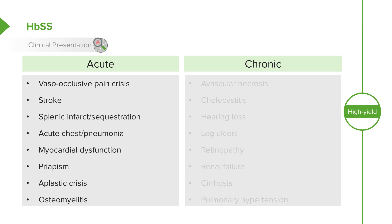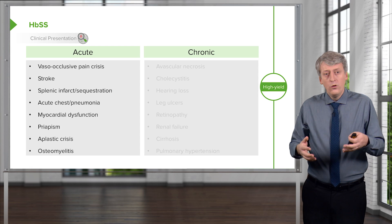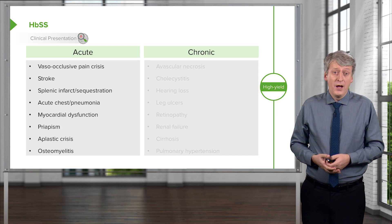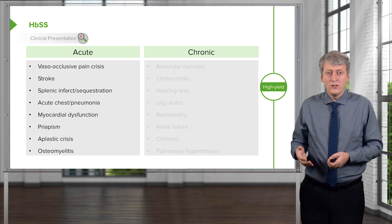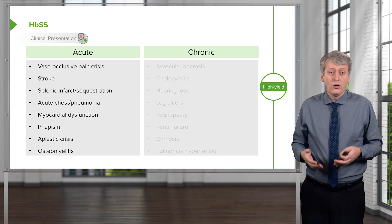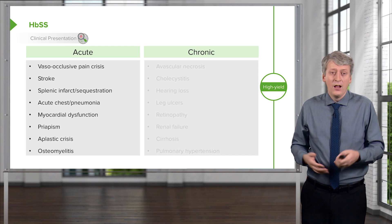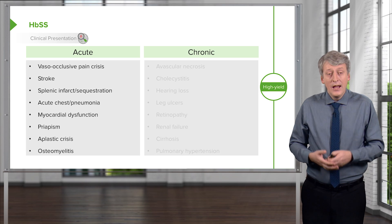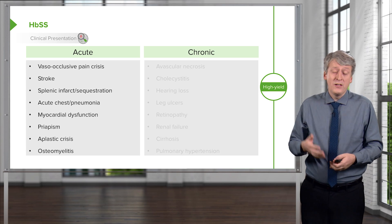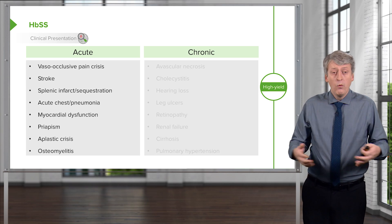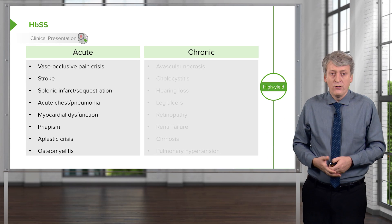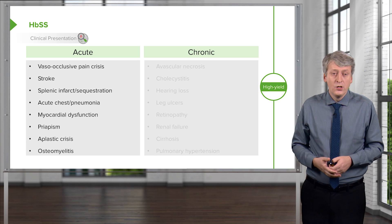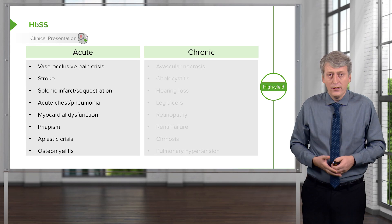Additionally, patients can develop osteomyelitis or bone infections. Normal patients can develop osteomyelitis too, but because these patients are asplenic, they are at risk for, unusually, a salmonella osteomyelitis. In these patients, group A strep is probably still the most common organism, but when we see them with an osteomyelitis, we have to think of expanding our antimicrobial coverage beyond the usual culprits, which are group A strep and staph aureus.